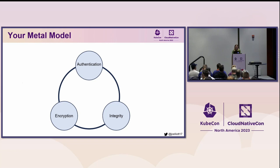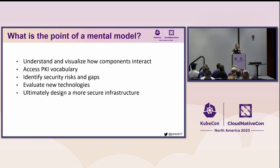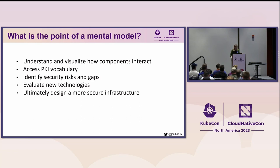Let's reflect on the mental model you've begun building with these PKI fundamentals. You now know how public key certificates, cryptographic keys, and certificate authorities all work together to form a public key infrastructure. The point of this mental model is that you can better understand how core tooling and components interact to form a secure infrastructure for digital communication. You have better access to understanding buzzwords such as zero trust environments and secure supply chains — and even core terms like encryption and authentication. You can also better identify security risks and gaps in proposed or existing architectures, evaluate and learn new PKI technologies, and ultimately design a more secure infrastructure.